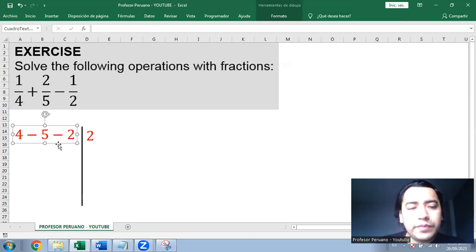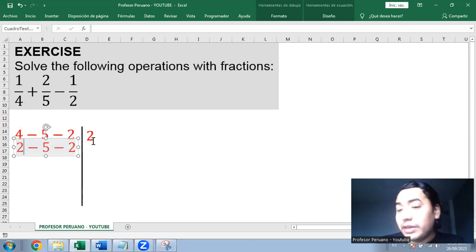We start with number 2. So we divide each one of them by 2. 4 divided by 2 is 2. 5 divided by 2 is not possible, it's not divisible by 2. And 2 divided by 2 is 1.